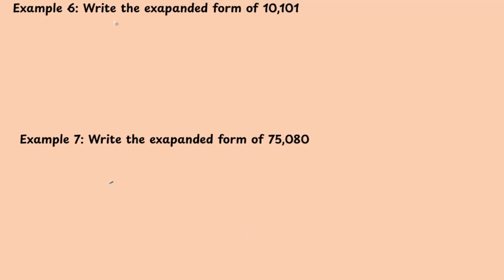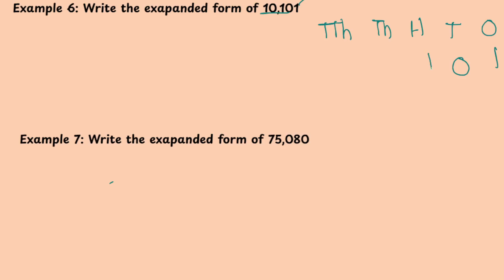Let me teach you an example. Write the expanded form of 10,101. So the digits are 1, 0, 1, 0, 1. Let me first write the place names: 1s, 10s, 100, 1000, 10,000. So 1 will be in the 1s place, 0 in the 10s, 1 in the 100s, 0 in the 1000s, and 1 in the 10,000s place. I have written the digits in their respective places.